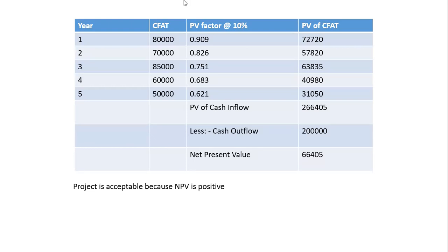This is the solution table. Years 1 to 5 cash inflows are given in the question. The PV factor at 10% uses the formula 1 upon (1 plus r) raised to n. So: 1 upon 1.1 gives 0.909; 1 upon 1.1 squared gives 0.826; 1 upon 1.1 raised to 3 gives 0.751; 1 upon 1.1 raised to 4 gives 0.683; and 1 upon 1.10 raised to 5 gives 0.621.